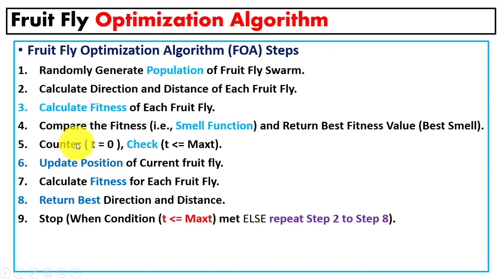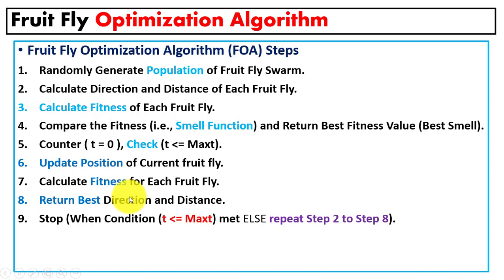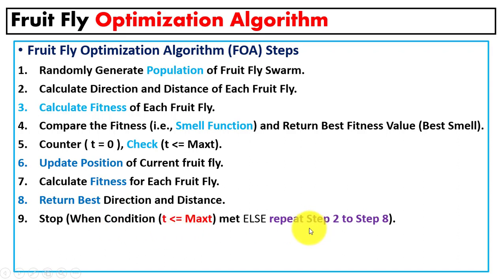After finding the best fitness, check the counter condition — if the condition is true, update the position for each fruit fly and compute the fitness value again. Then return the best fruit fly with the best fitness value and directions. We repeat this loop until the stopping condition is met; when the condition is met, we stop — otherwise, we repeat the algorithm.